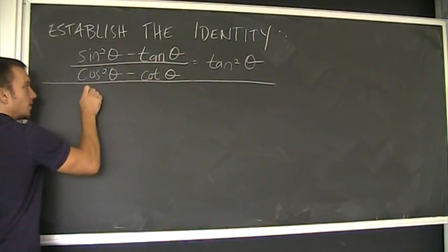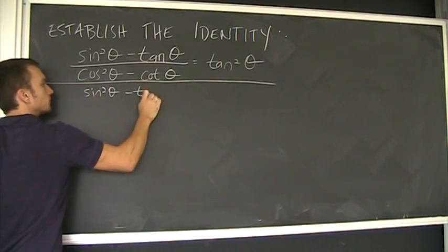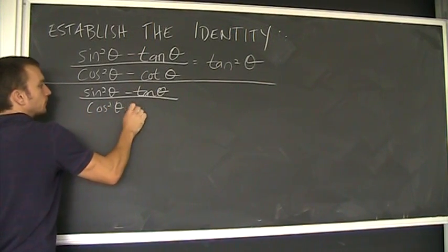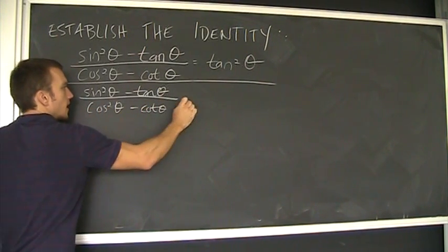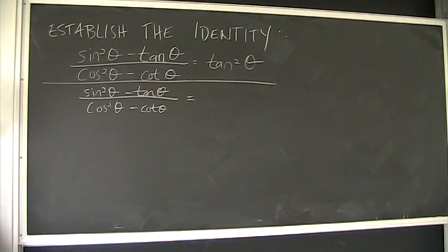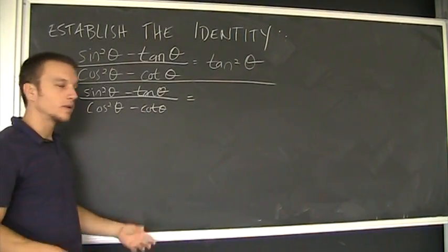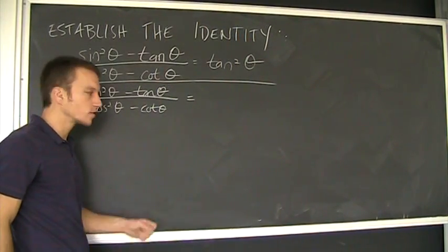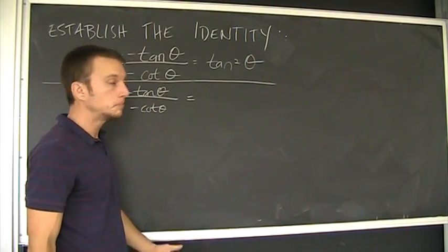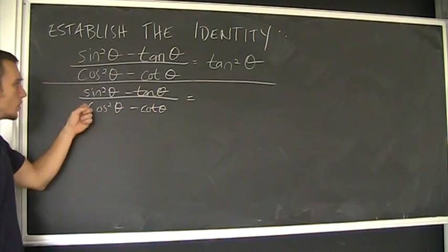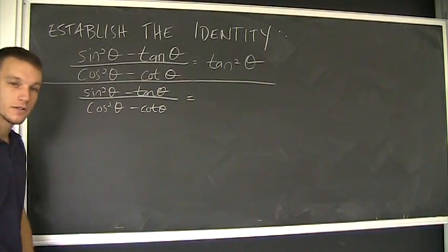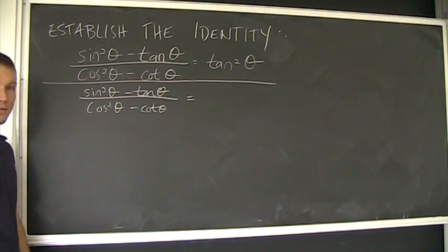So rewrite this left-hand side. So let's see. What can I do? The way I look at it, you've got two choices. You can replace tangent theta with sine theta over cosine and cotangent with cosine theta over sine theta. Or you could replace these using the Pythagorean identity, sine squared theta one minus cosine squared, and similar with the cosine squared.